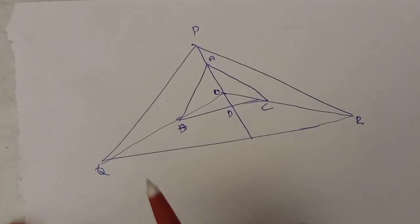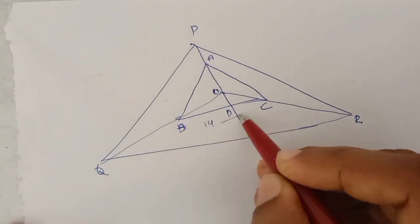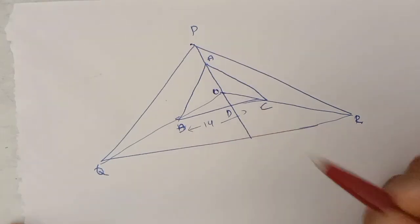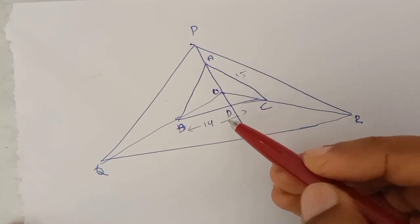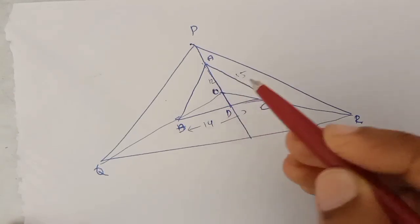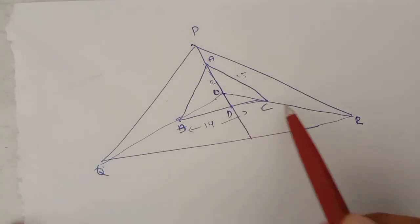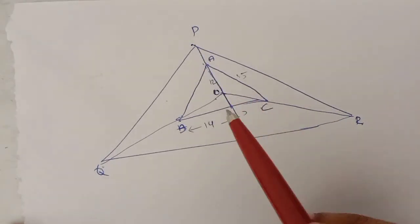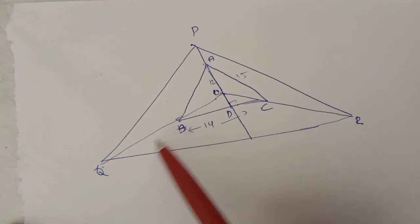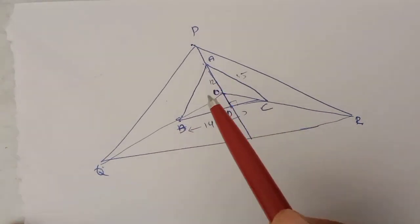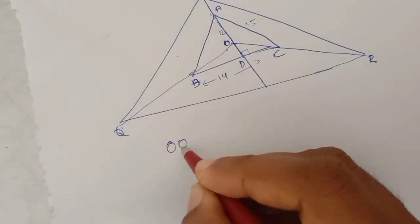This is the length for Activity 2. Question number one: the values are 14, 15, and 12. OB equals BQ, OC equals CR, OA equals AP, and the angle is 90 degrees.